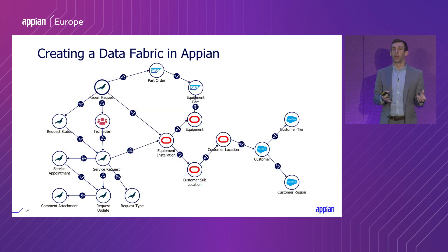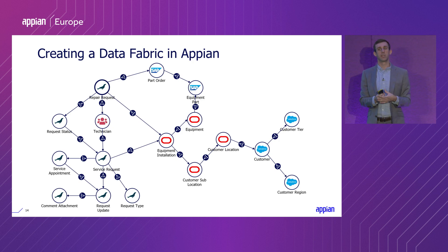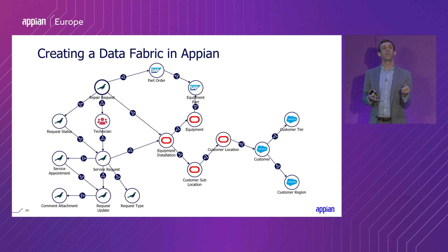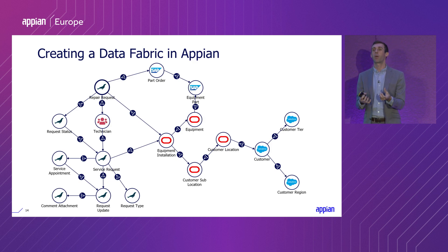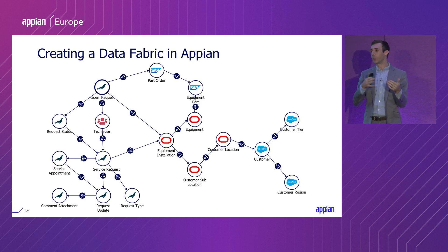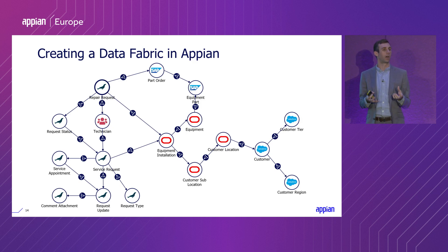What we end up with is this grid where the information is coming from different sources, but from the perspective of the low-code developer, all of these are represented as records and you can use them in consistent ways regardless of where the source data is actually coming from. This is really where the power comes from in our application design — now you don't have to learn how to interface with all of these separate systems. Instead, you can create connections to each of these systems, cache the data in Appian, and then have a consistent way of dealing with all of this data.